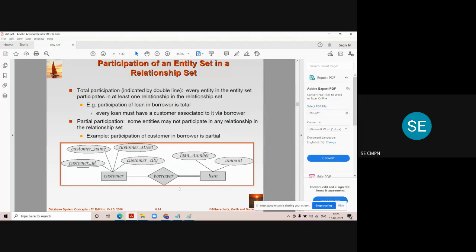So this type of relationship is called as partial participation in the relationship set. And it is always represented by single line and total participation is represented by double lines in the ER diagram.